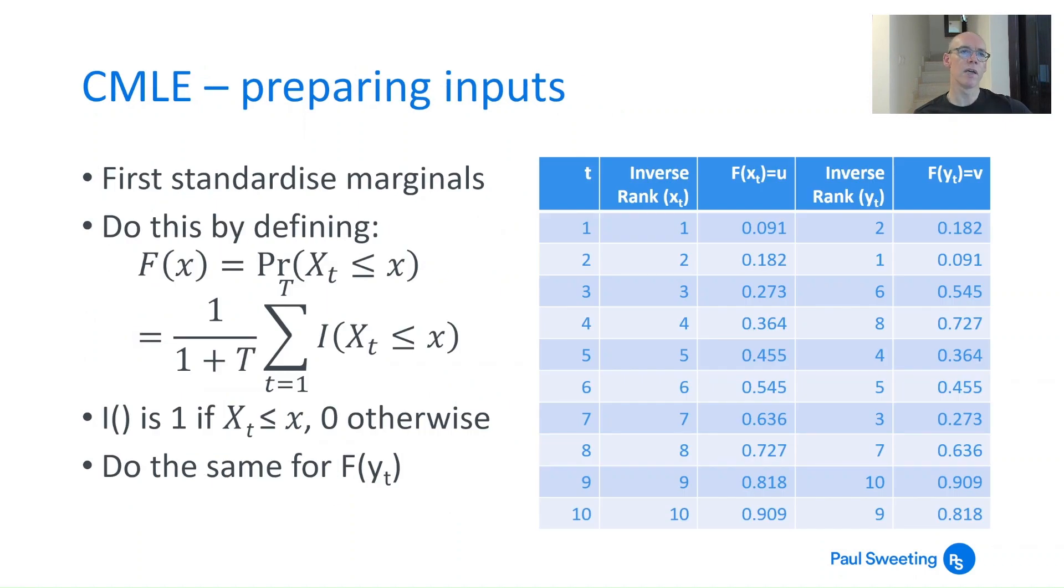If you are using CMLE, canonical maximum likelihood estimation, the first thing you need to do is standardize your marginal distributions. You do this by defining the distribution function, which is the probability that some value of x_t is less than a given value, using an indicator function. Essentially what you're doing is looking at where your observations are and dividing them by the number of observations plus one. So your distribution function will never be zero and will never reach one.